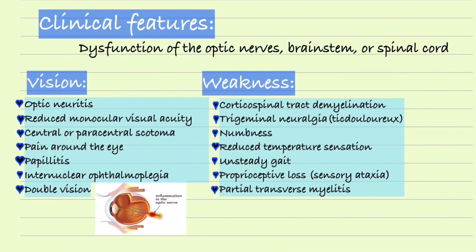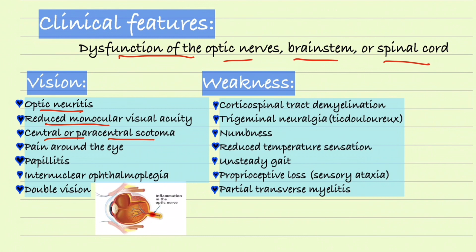The clinical features of multiple sclerosis include dysfunction of the optic nerve, brainstem, or spinal cord. Two classical features are vision problems and weakness. Regarding vision, patients usually present with monocular optic neuritis — inflammation of the optic nerve, which is highly myelinated and a classical target for the immune system. Patients also present with reduced monocular visual acuity, central or paracentral scotoma, sometimes pain around the eye, papillitis, or internuclear ophthalmoplegia causing double vision.